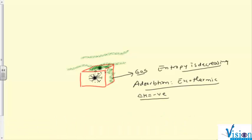So in that case, delta S is negative. To make this phenomenon fruitful, according to the laws of thermodynamics, delta G has to be less than zero.